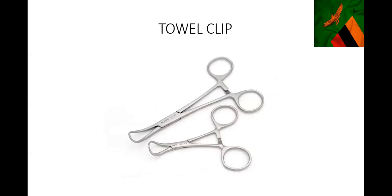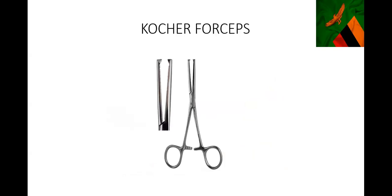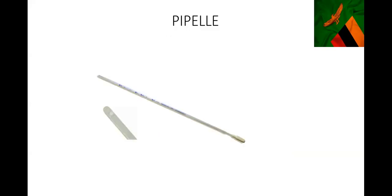These are just towel clips. When we drape the patient, we don't want towels moving around, so we use these clips to hold the towels in place on the patient. This is a Kocher's forcep - something we use to hold onto tough tissues like vaginal tissue. We use it for artificial rupture of membranes and to hold onto the vault of the uterus during hysterectomy.